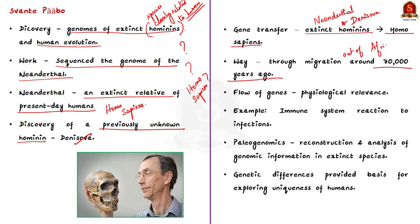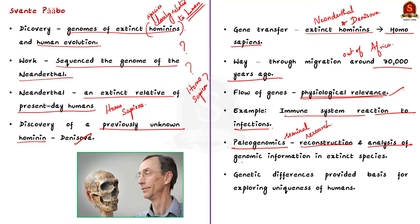This ancient flow of genes to present-day humans has physiological relevance today. For example, it affects how our immune system reacts to infections. Pääbo's seminal research gave rise to an entirely new scientific discipline: paleogenomics. Paleogenomics is a field of science based on the reconstruction and analysis of genomic information in extinct species. By revealing genetic differences, Pääbo provided the basis for exploring what makes us uniquely human.